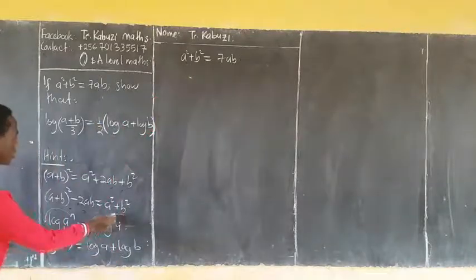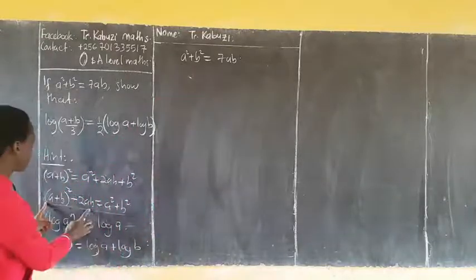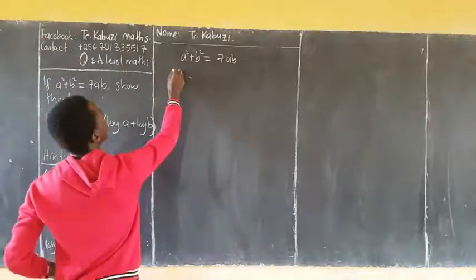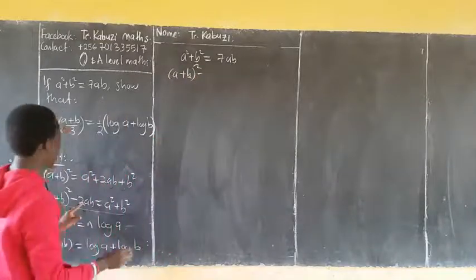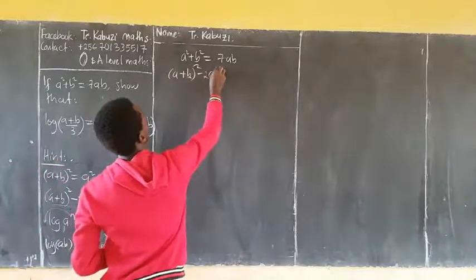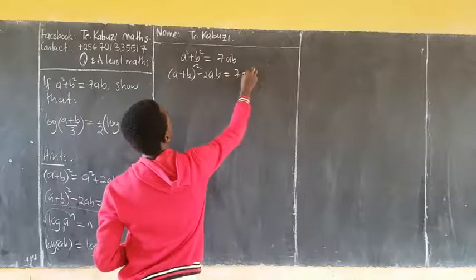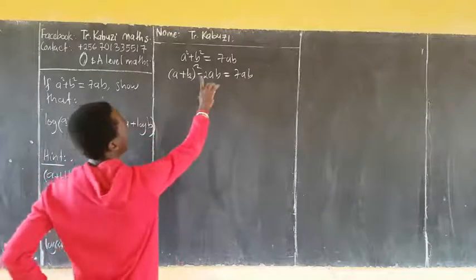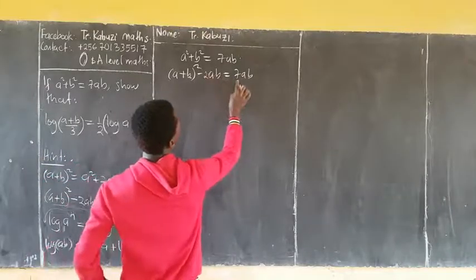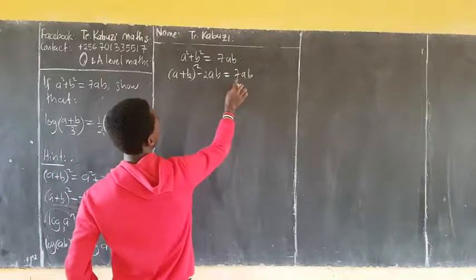So I am going to put this, and we are adding now. (a+b)² minus 2ab equals 7ab. So remember this. Allow me to take 2ab to this side. When I take it this side, it is going to become plus, and we are adding 2ab.